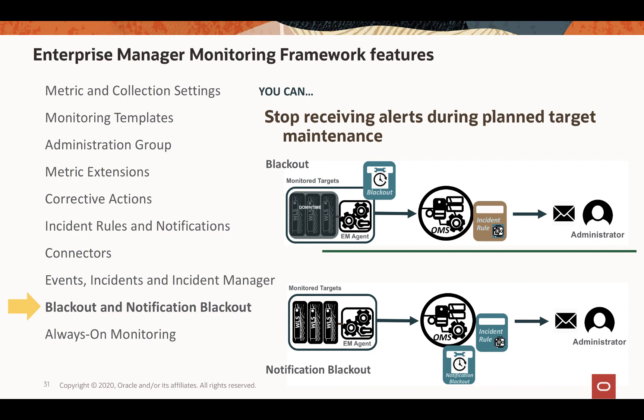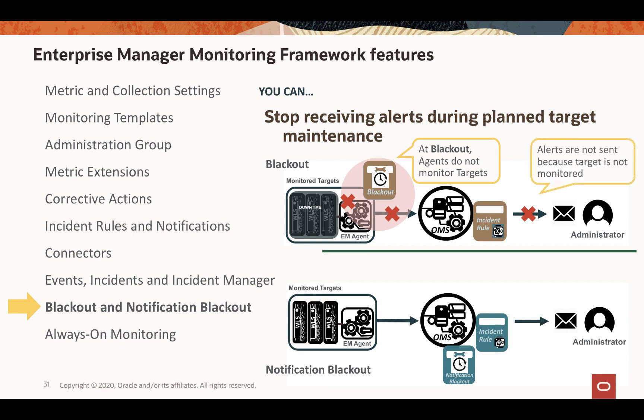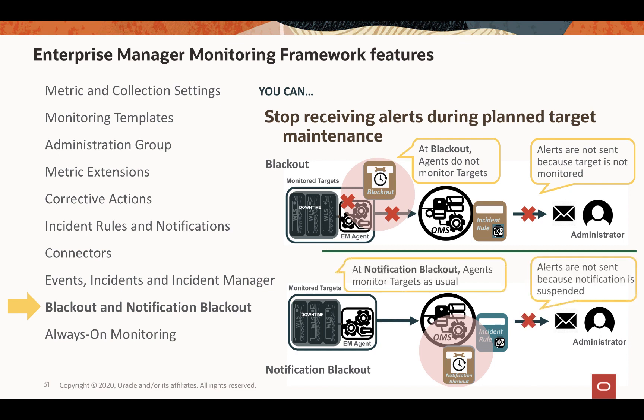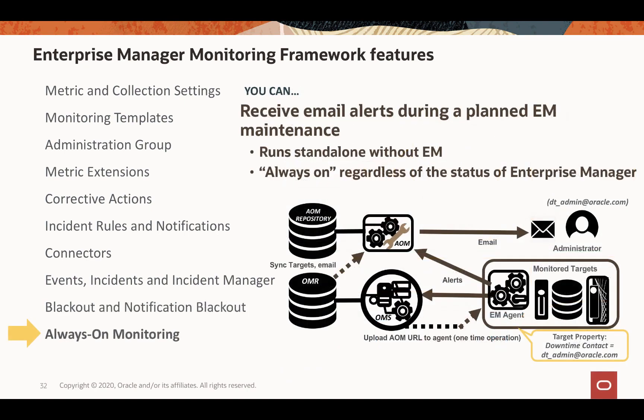Traditional blackout is an agent-side operation that suspends the entire target monitoring — with no monitoring, there are no alerts. Notification blackout is an OMS-side operation that continues to monitor targets during the specified period but simply suspends the notification. And lastly, always-on monitoring allows you to receive email alerts during planned Enterprise Manager downtime. It runs standalone without EM, so it can always be on regardless of Enterprise Manager's status. The agent sends alert information to both always-on monitoring and OMS, so when EM is brought down, always-on monitoring continues sending email notifications.